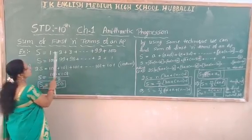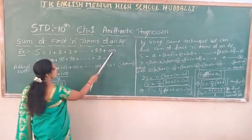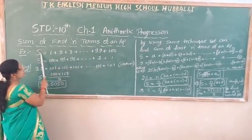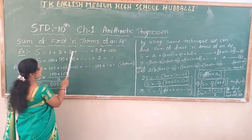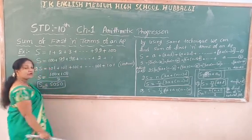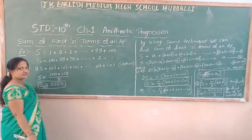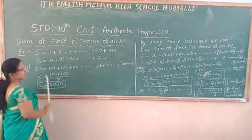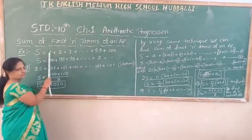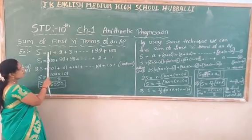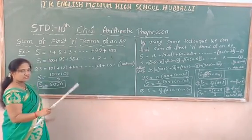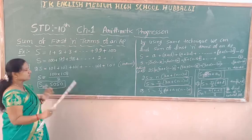I want to find out the sum of 1 plus 2 plus 3 plus ... up to 100. I will write it first. Sum of 1 to 100 terms means I write: 1 plus 2 plus 3 plus up to 100.